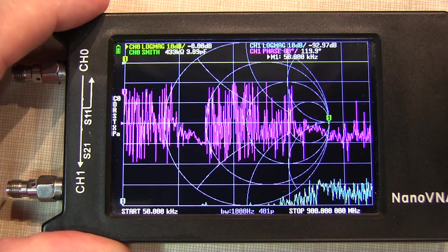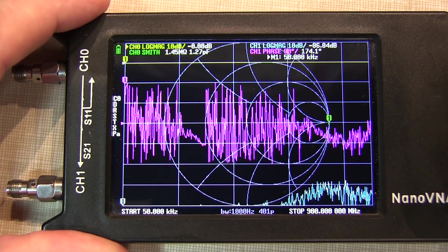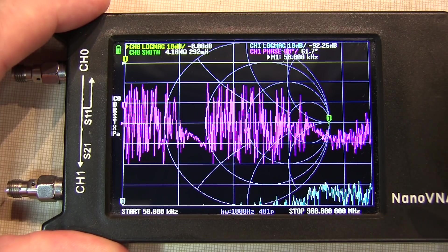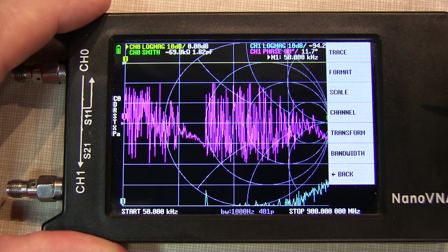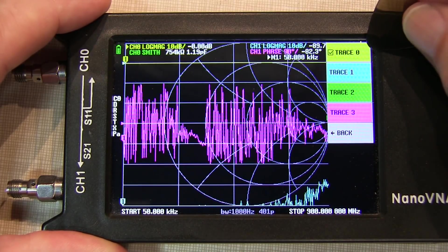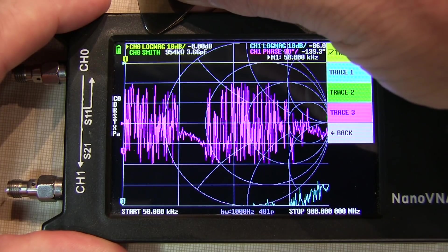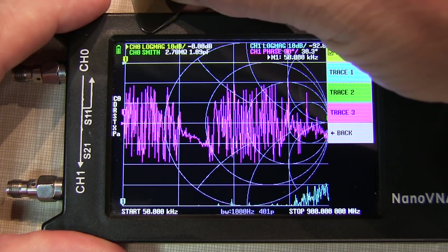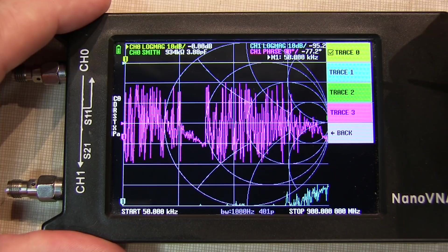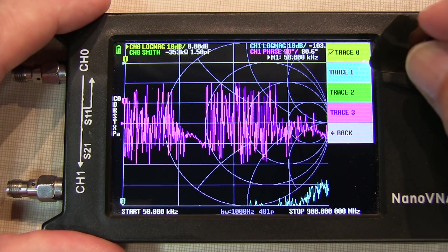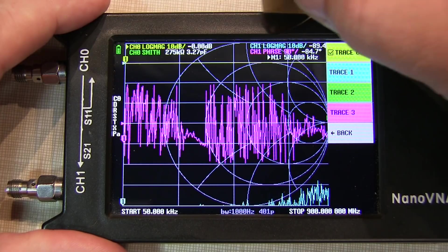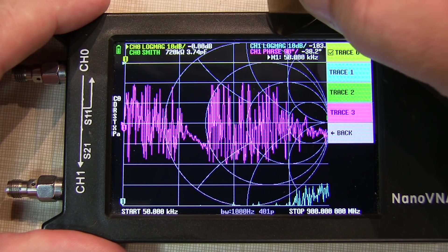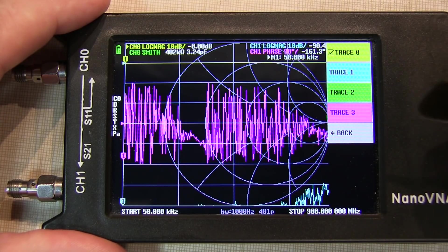The first thing we have to do is set up the NanoVNA for the traces that we want, the frequency range that we want, and we have to calibrate it. So let's start off by selecting the traces we want displayed. We'll go to trace, trace 0 is the S11, which is the input reflection coefficient, so we'll take a look at that. Trace 1 is the S21, which is essentially the gain of the amplifier, so we'll leave that one on.